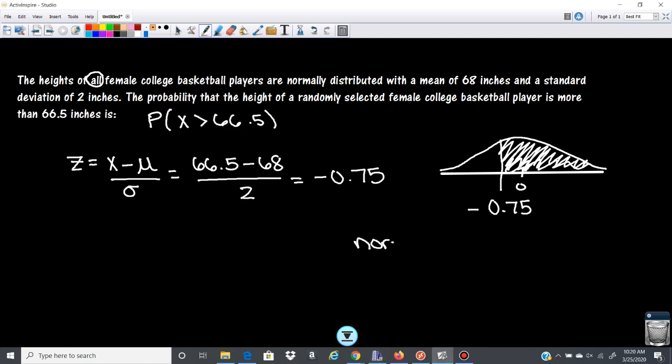So normal CDF, negative 0.75, 99 gives us 0.773. So it was greater than that 0.5 there.